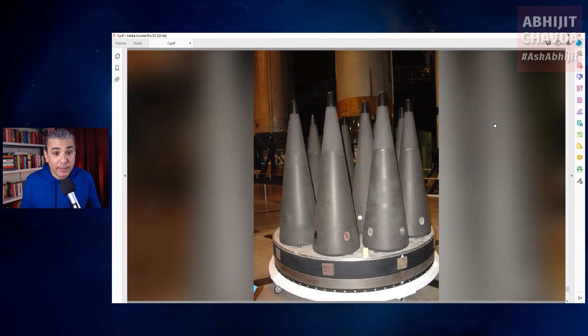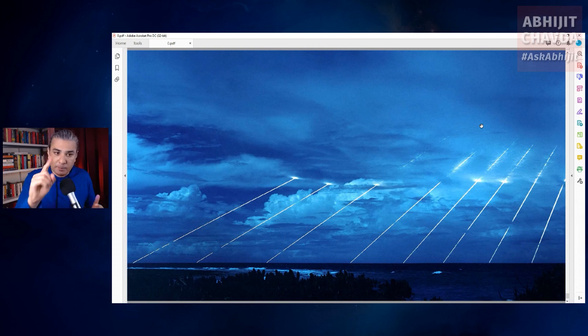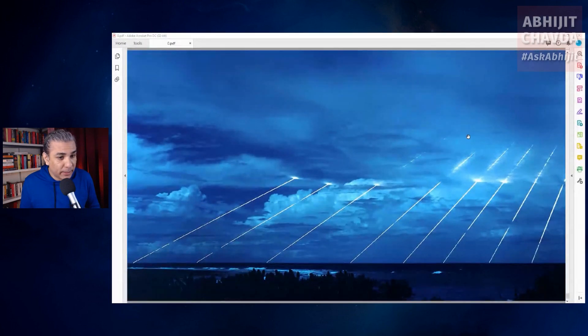Ballistic missiles can carry multiple warheads using multiple independently targetable re-entry vehicle technology, MIRV technology. This MIRV technology makes it possible for each warhead in a single ballistic missile to be aimed at different targets. And that brings us to an end of this very quick nuclear physics crash course.